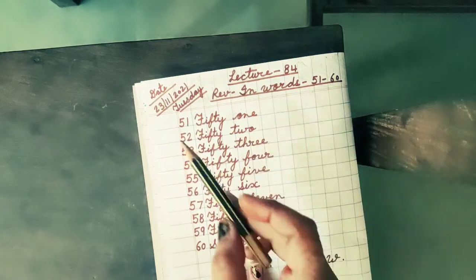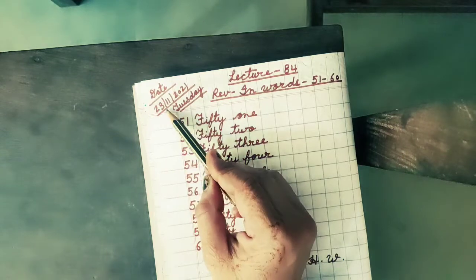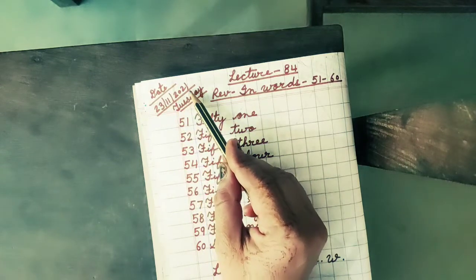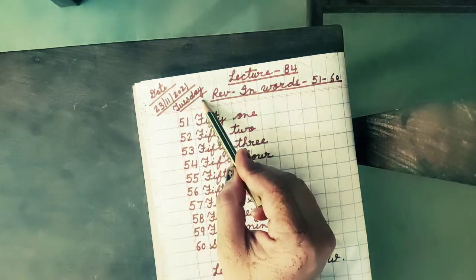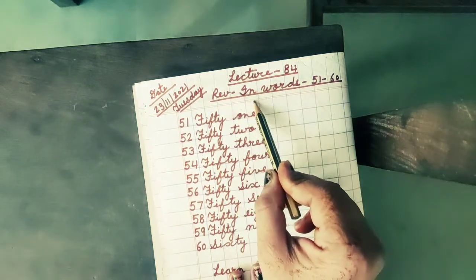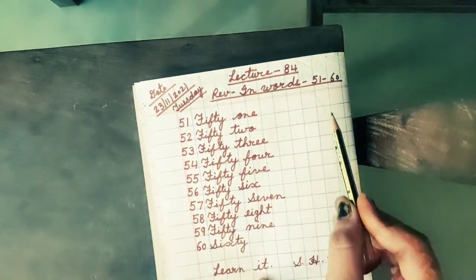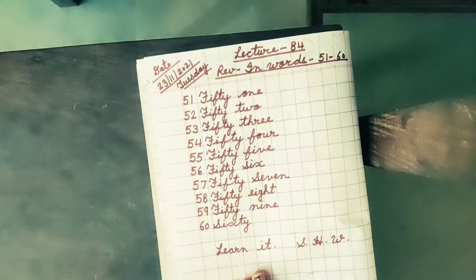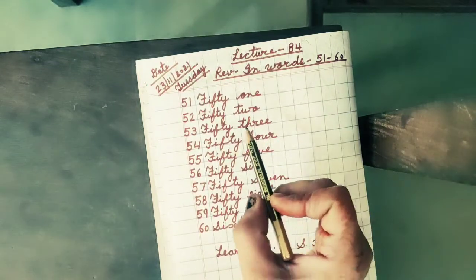Date is 23rd of November, 11 months, year 2021. Day is Tuesday. Lecture number 84. Revision: 51 to 60. 51 to 60, you have to write the spelling.